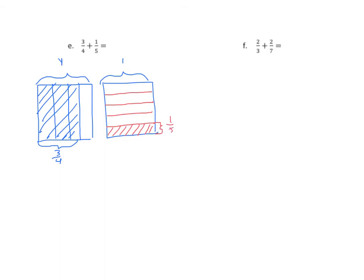Now we're going to find our common denominators and equivalent fractions. For the first addend, we're going to partition it into five equal parts with four horizontal lines. We'll see how many parts we have — that determines our denominator. Four by five is twenty, so our denominator here is twenty.